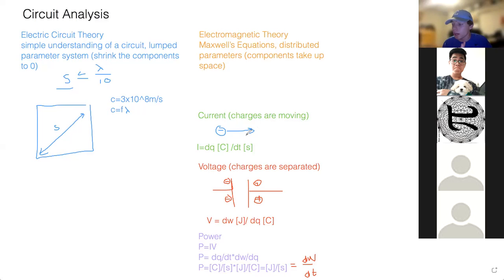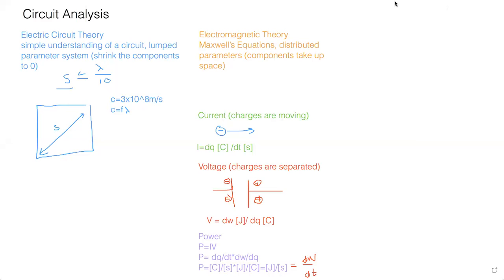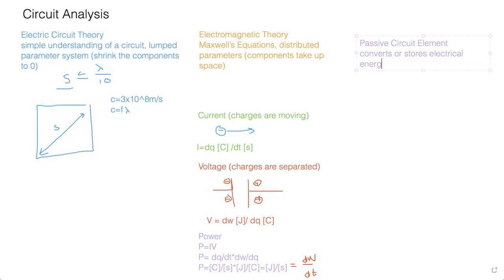Now I want to talk about the difference between passive and active circuit elements. You'll encounter passive elements throughout EE 211, but active circuit elements in EE 330. A passive circuit element basically converts or stores electrical energy. Examples include resistors, inductors, and capacitors.